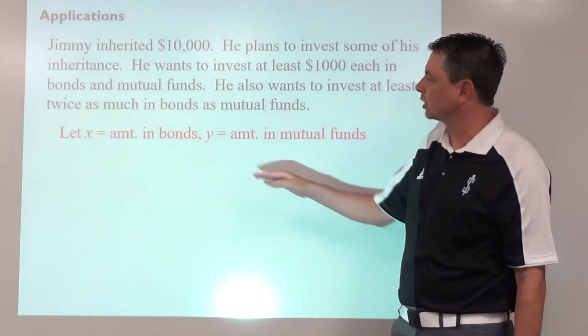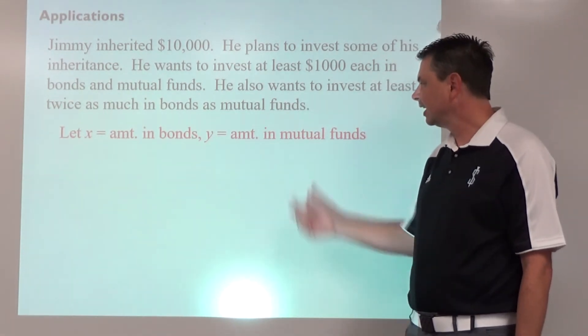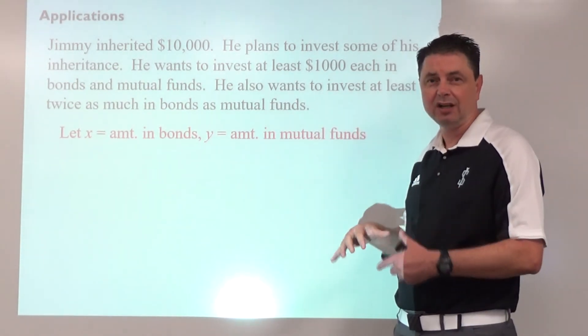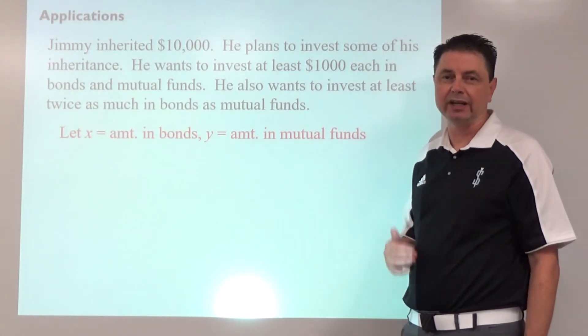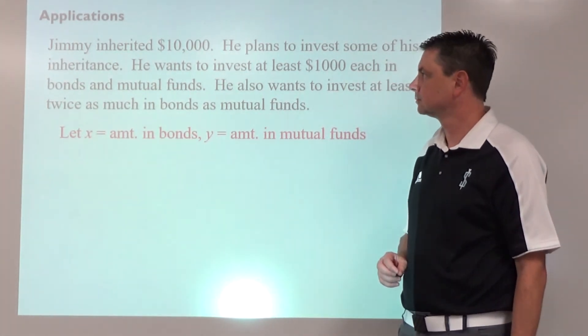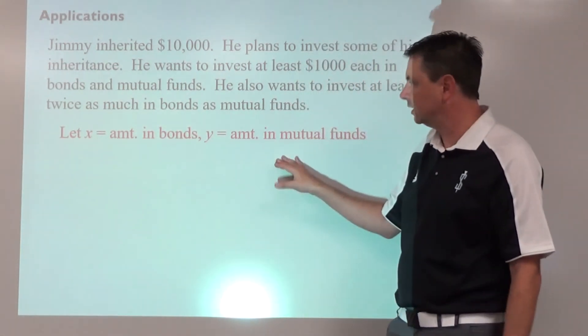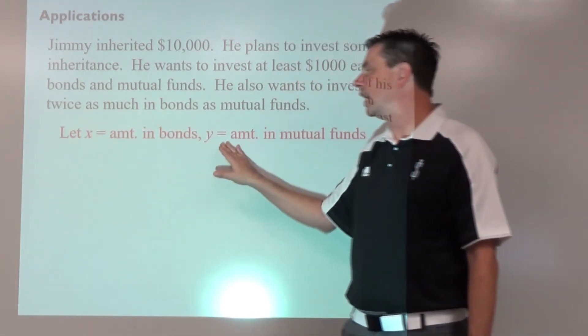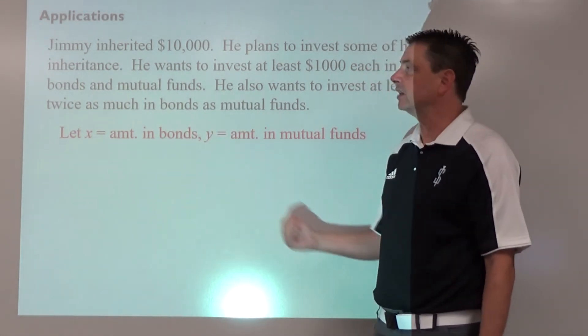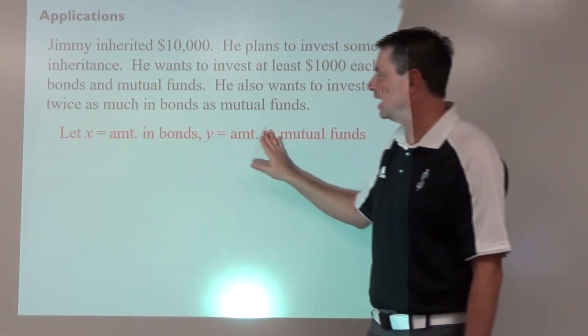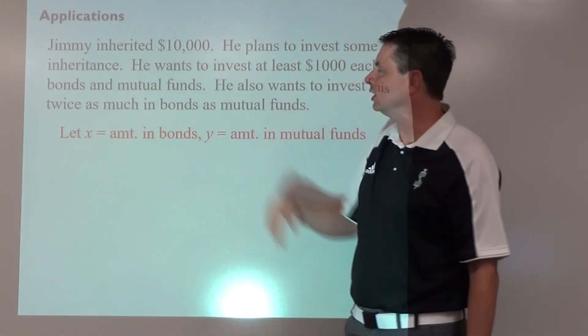So let x be the amount that we're going to invest in bonds, y is the amount that we're going to invest in mutual funds. If you didn't know, mutual funds are just a collection of different people throwing money in and using all that money to invest in the stock market. So these are going to be inequalities. Clearly we can't invest negative, so x has to be greater than or equal to zero, y has to be greater than or equal to zero. We don't always specifically write those, but those are definitely implied. We have his inheritance, so the amount plus the amount cannot exceed this. He may decide not to invest all of it, so it has to be less than or equal to the $10,000.